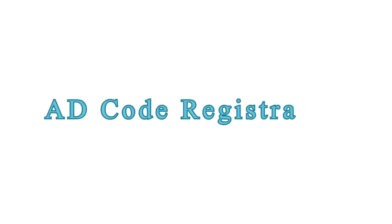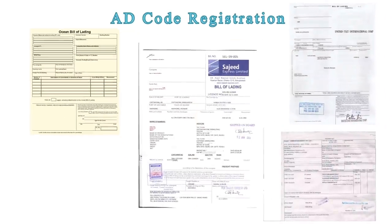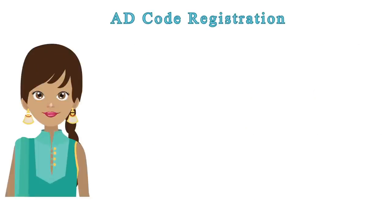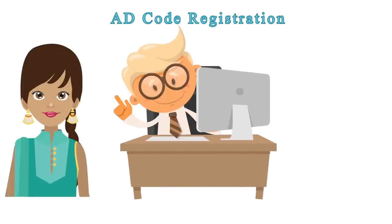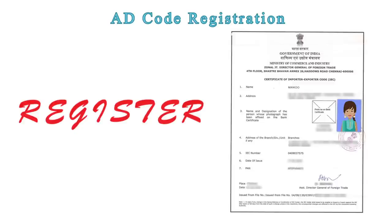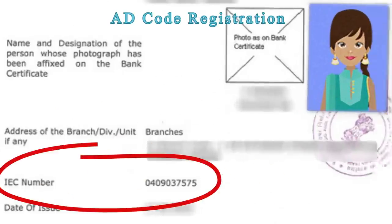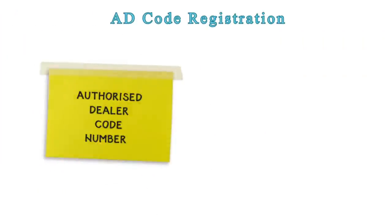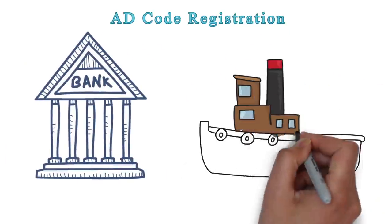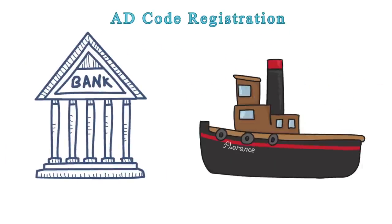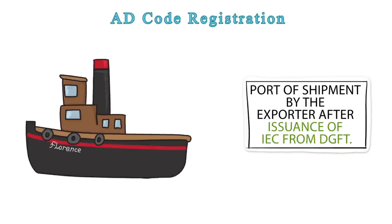A.D. Code Registration: Before filing any export shipping bill, Nikku or the CHAs are required to register with the customs their IEC code and Authorized Dealer code number of the bank through which export proceeds are to be realized. A.D. Code Registration is done at the port of shipment by the exporter after issuance of IEC from DGFT.